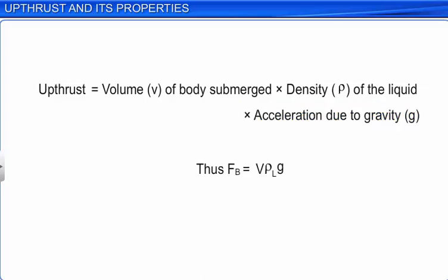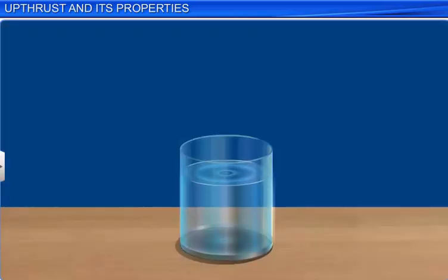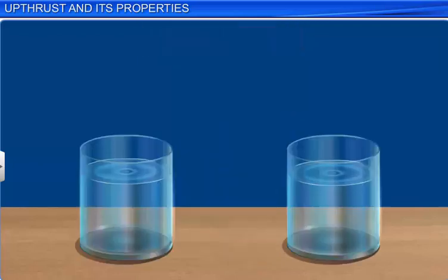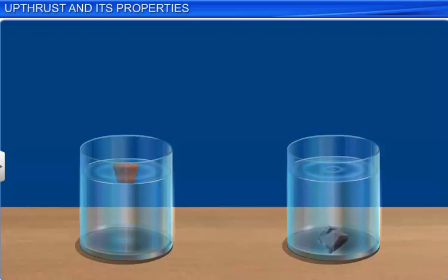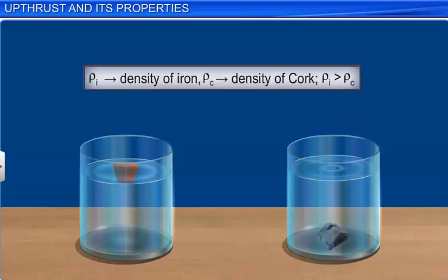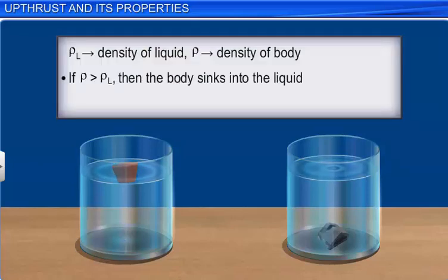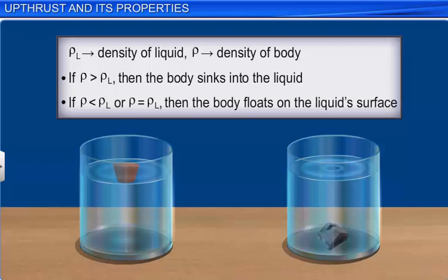If you drop a piece of iron into water, it sinks, because the force of gravity is greater than that of upthrust. Take identical masses of iron and cork and place them on the surface of water — the piece of iron sinks while the cork floats. This is because the density of iron is greater than that of water. If rho (ρ) is greater than rho-L (ρL), then the body sinks into the liquid. If rho is less than or equal to rho-L, then the body floats on the liquid surface.